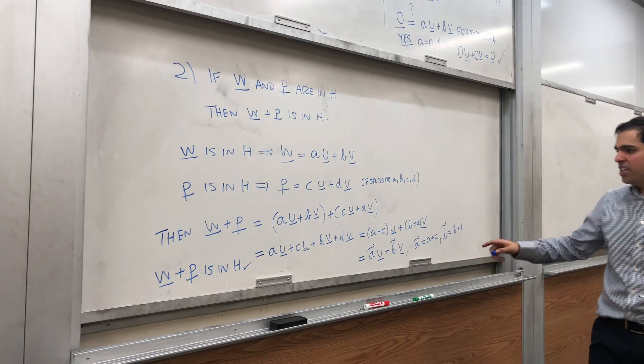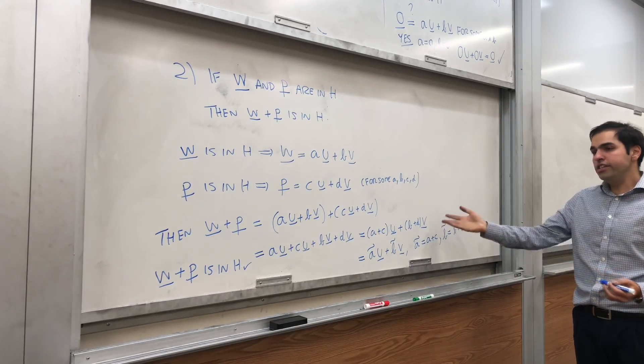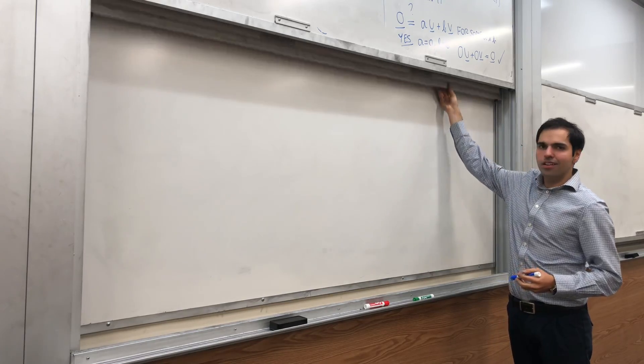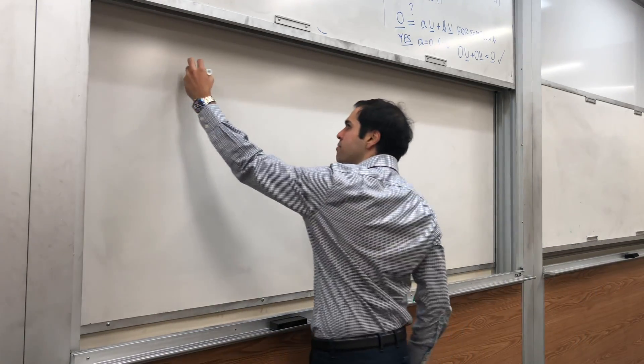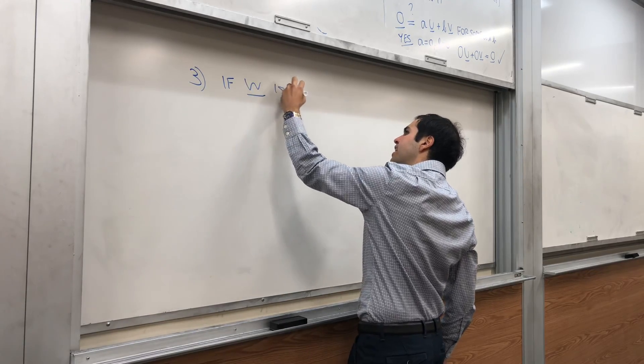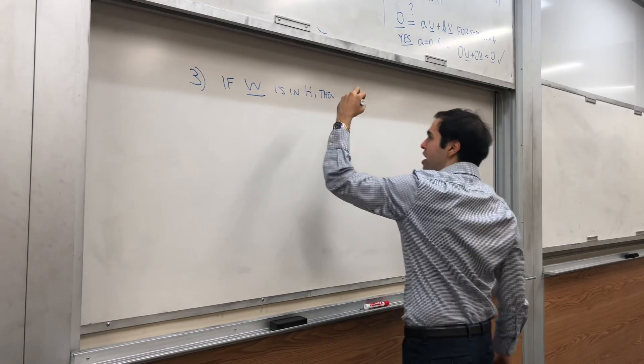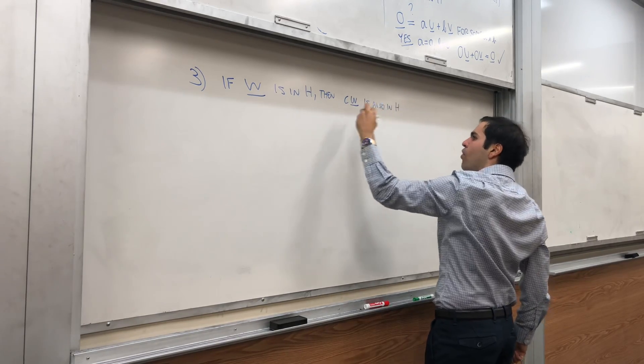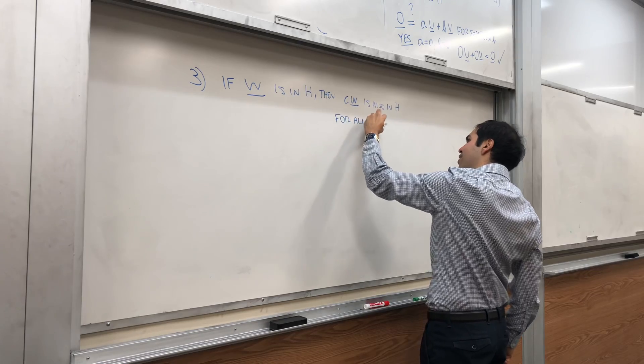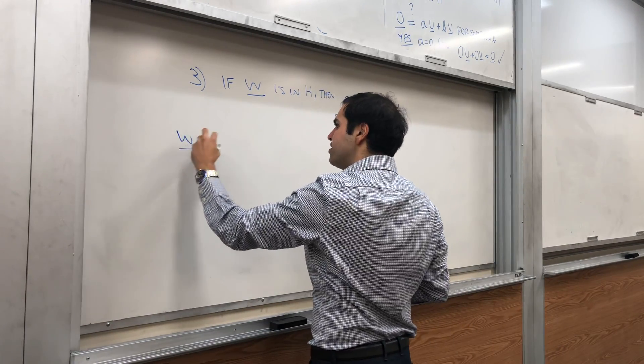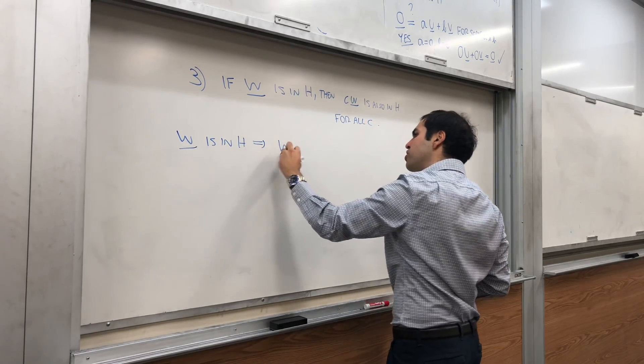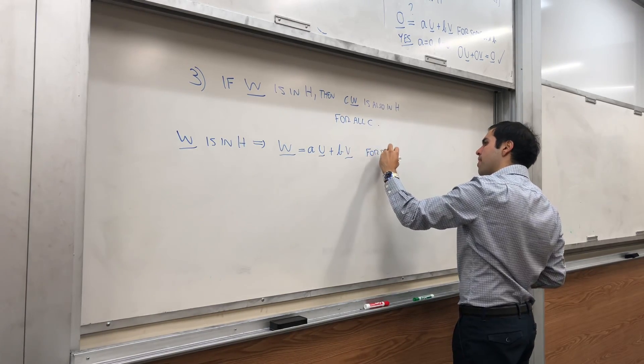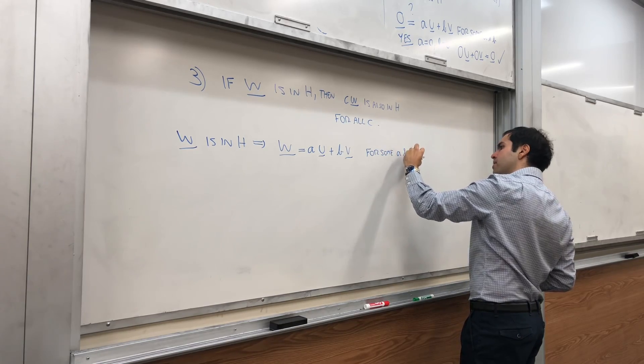Because in order to be in H, you need to be a linear combo of U and V. And indeed, we've shown that W plus P is a linear combo of U and V. That's the second requirement. The last one is simply, if W is in H, then CW is also in H, for all real C. Well, if W is in H, this means that W is a linear combo of U and V. So, AU plus BV for some A and B.